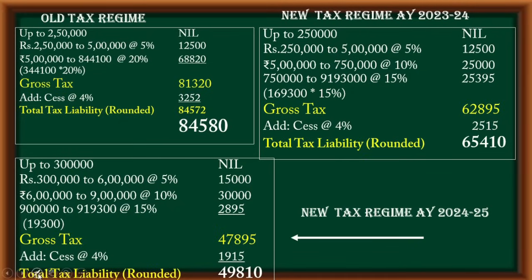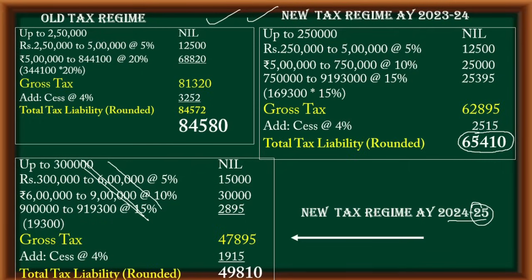The latest regime AY 2024-25 may not come in your exam paper yet since it's still upcoming — but remember it just in case. If asked which regime to opt for, note that we should opt for the New Regime as it gives the lower tax liability. Pay the lower tax liability as per New Regime.